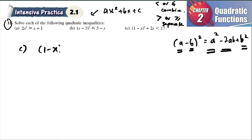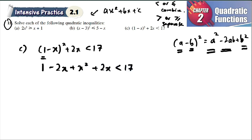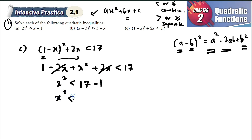For part C: (1 − x)² + 2x < 17. Expanding: 1² = 1, 2 times negative x gives negative 2x, and x² gives x². So you get 1 − 2x + x² + 2x < 17. You can see the negative 2x and 2x cancel out, leaving just x² + 1 < 17.